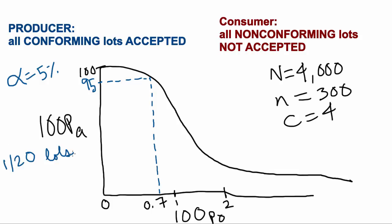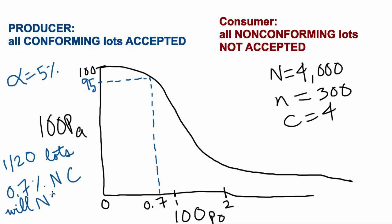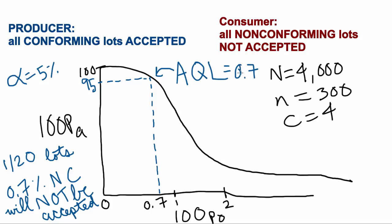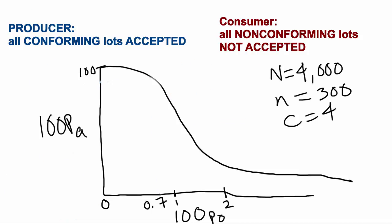What this tells us is that if the producer is willing to take a 5% risk, then one out of 20 lots — or 5% of all lots — will not be accepted at a rate of 0.7% non-conforming. This brings us to another new term: the AQL, or the acceptance quality limit. The AQL is the percent non-conforming that corresponds with a particular alpha level.